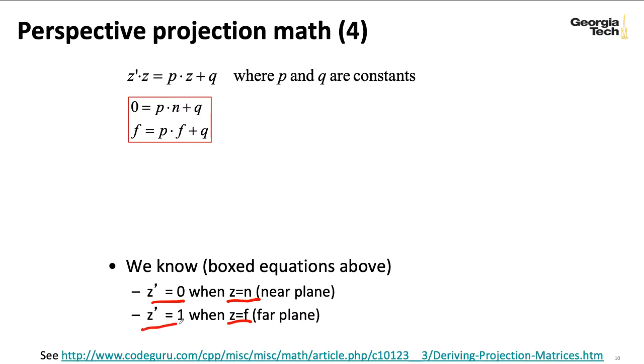Z equals F, our far plane is going to map to Z prime equals one. If I wanted to use an OpenGL convention, I could have Z prime equal minus one. But here we're doing the direct 3D convention.